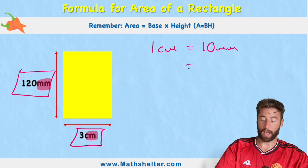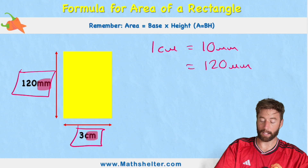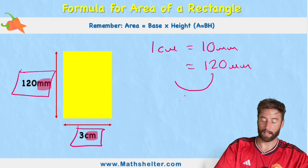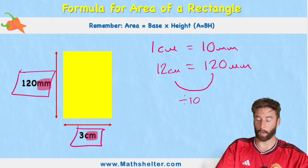So if I have 120 millimetres, what I need to do is divide this by 10 to get to my centimetres. So 120 divided by 10 equals 12. So 12 centimetres equals 120 millimetres.